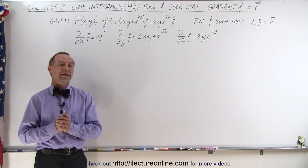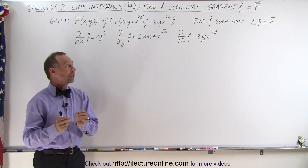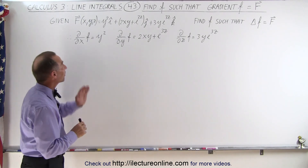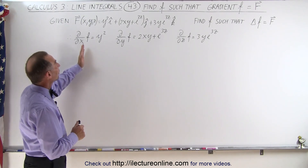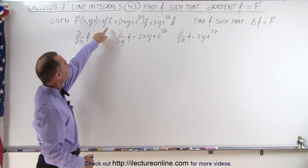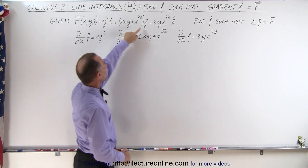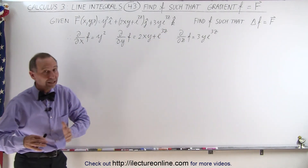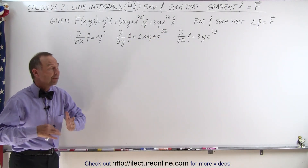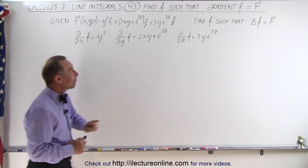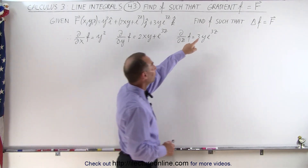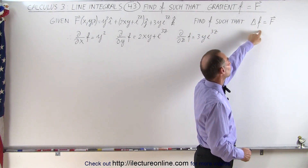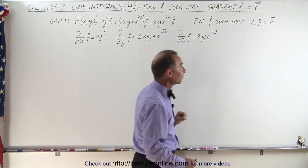Welcome to our lecture online. To expand what we did on the previous video, we now have a vector field in three dimensions. We have an I component, a J component, and a K component. And assuming that this is a conservative vector field, there should be a function of X, Y, and Z such that the gradient of the function gives us back the vector field.